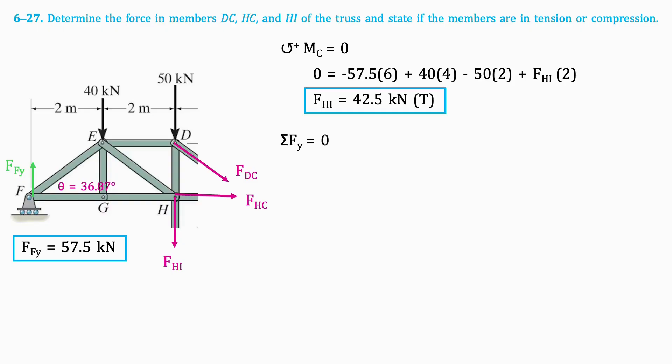Then we'll take the sum of vertical forces. This is the resulting equation, which when isolated for FDC results in 125 kN in compression.